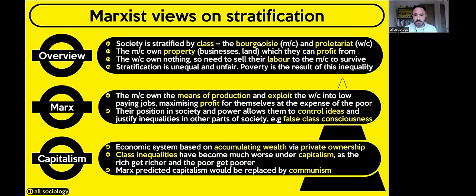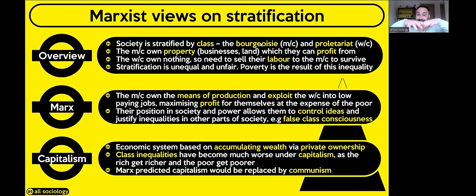Communism is a system based on no private ownership of profit-making entities. No one owns the factories — everything is collectively owned and any profit generated gets shared amongst everybody. Marx thought that would be a fairer system. However, there are problems. Is capitalism really that bad? Things have actually improved quite significantly since Marx was writing — our life expectancy is significantly higher now than 100 to 200 years ago. So capitalism has done an awful lot of good in the world.